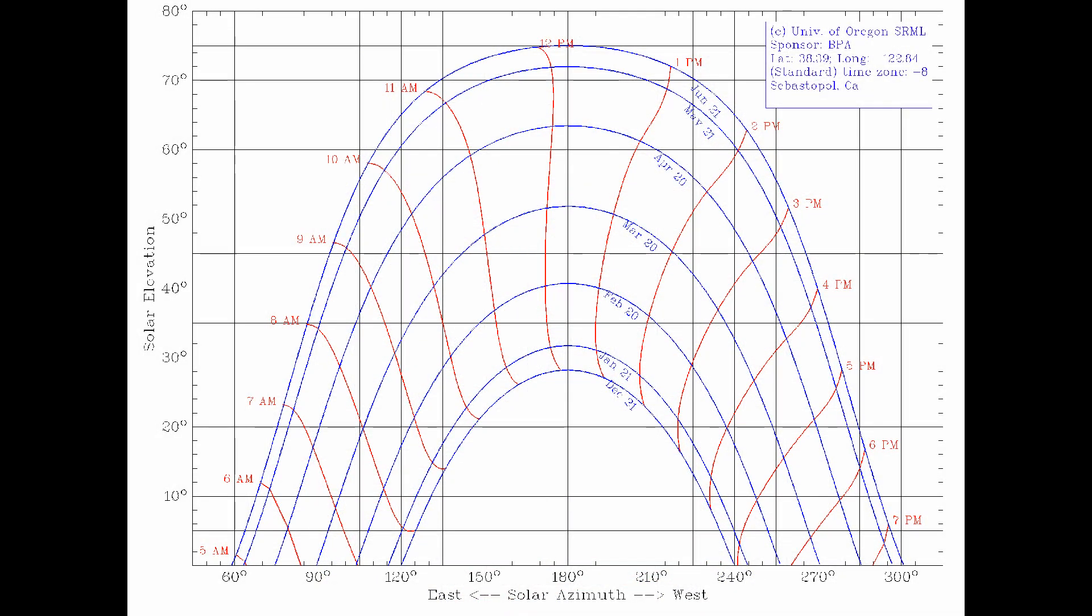On the sun path chart, the largest arc is for June 21st, the summer solstice. The smallest arc is for December 21st, the winter solstice. The lines in between each represent two months. For example, the May 21st line is also the July 21st line, since they are the same distance from the solstice on June 21st.